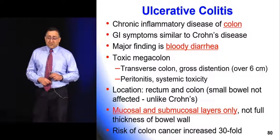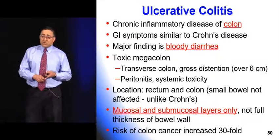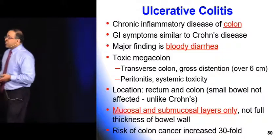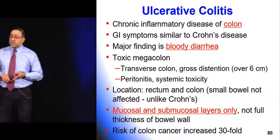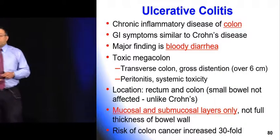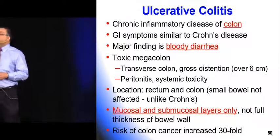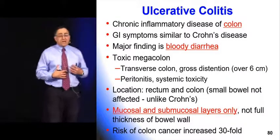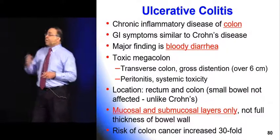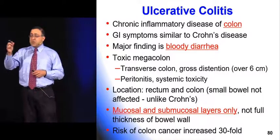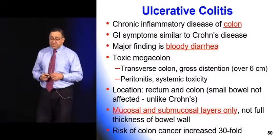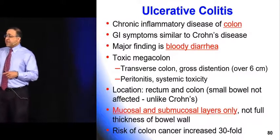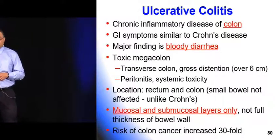Ulcerative colitis only involves the colon, while Crohn's can be anywhere. UC is almost always associated with bloody diarrhea. Either condition can develop toxic megacolon, but it's far more common with ulcerative colitis, and those patients tend to be a lot sicker. The risk of colon cancer is also much higher with UC — about 30 times higher than normal patients.